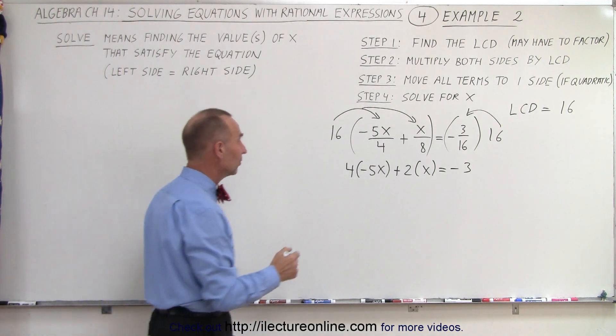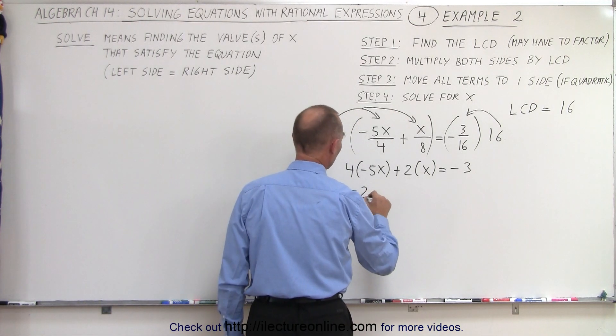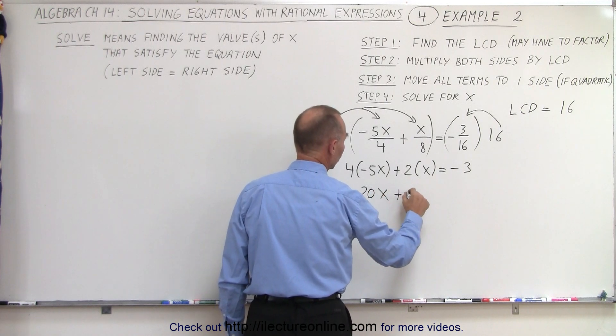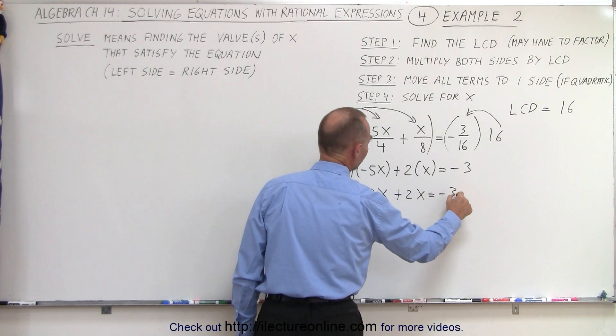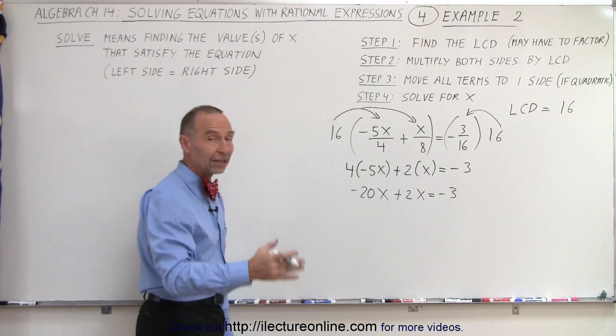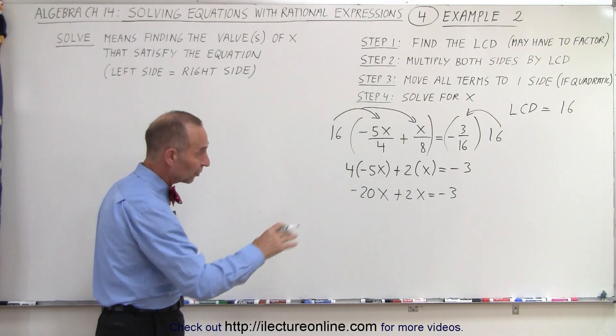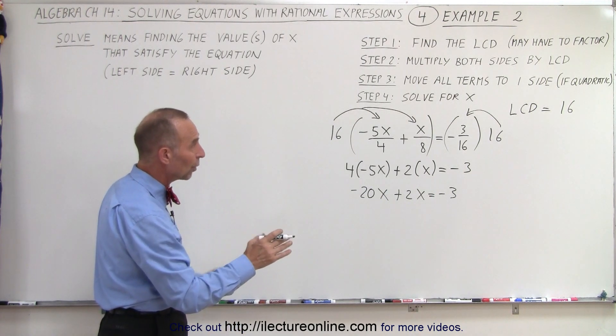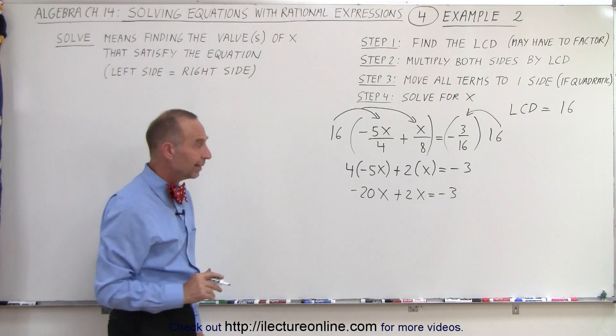Now we get rid of the parentheses, so we end up with minus 20x plus 2x equals negative 3. And notice that all the x is already on one side, the numbers on the other side. We don't have a quadratic equation, so we don't have to move everything over to one side.